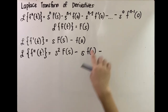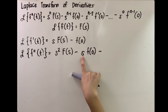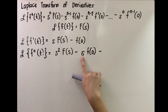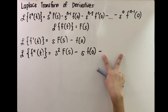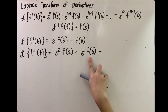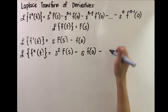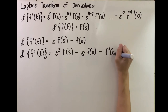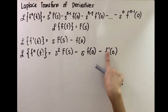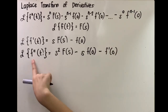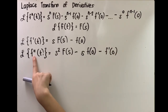Then minus: subtract 1 from the exponent, giving s raised to 0, which means this is the last term. So we don't write s raised to 0 anymore — it equals 1. After this it should be followed by the derivative, so we'll take the first derivative evaluated at 0: f prime of 0, which is one order lesser than the second derivative.